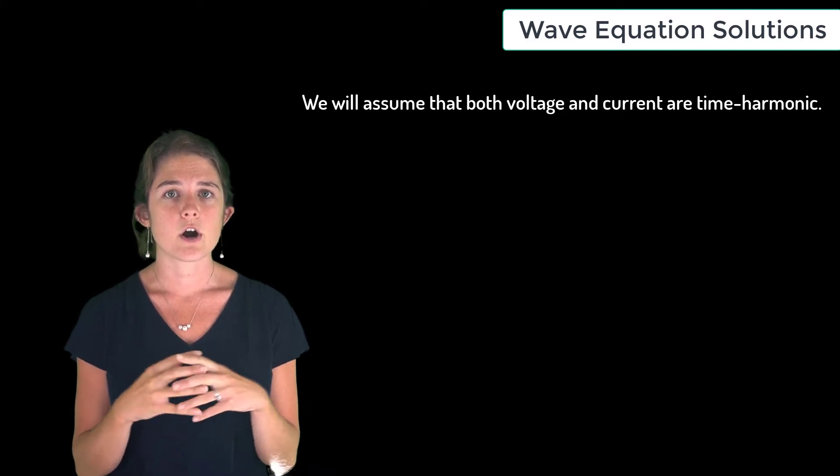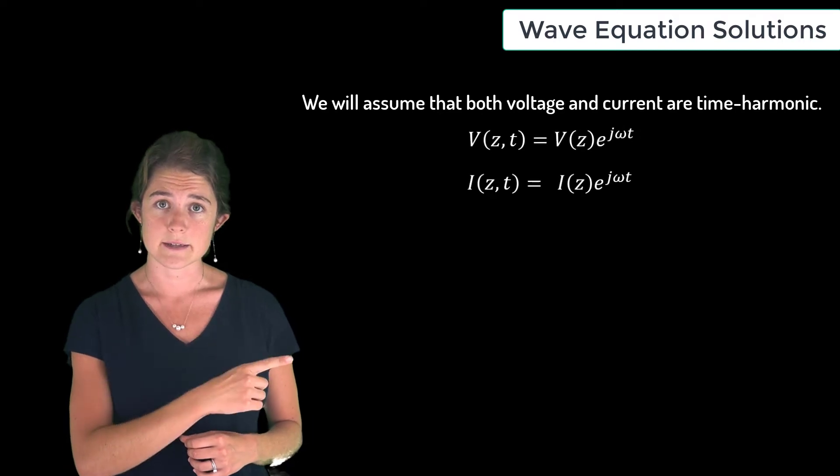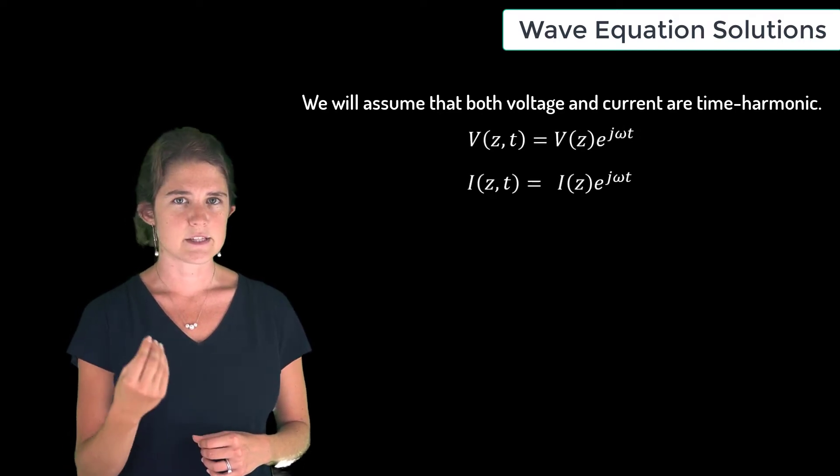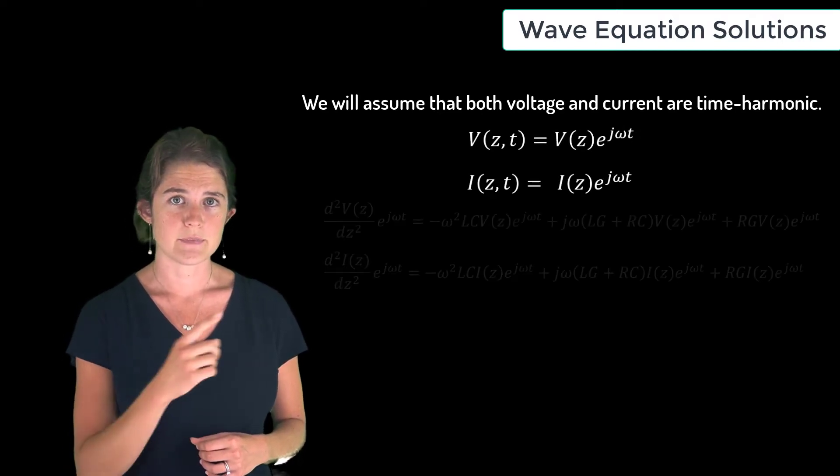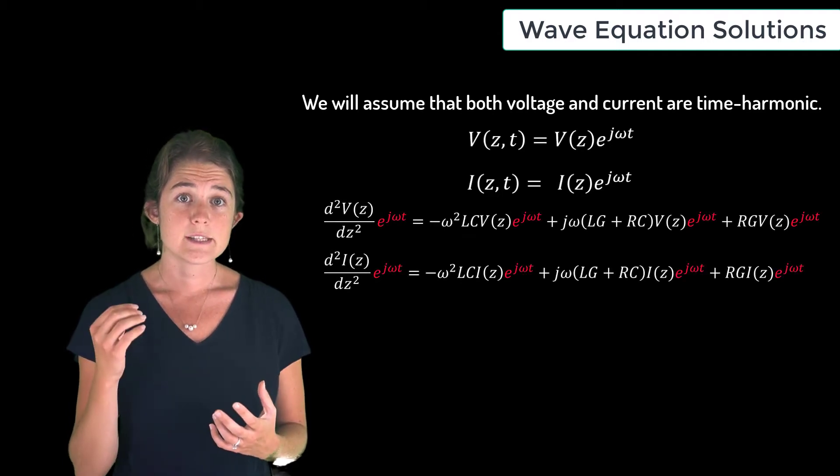both quantities are proportional to a time harmonic, meaning that the voltage and current may be written like this. This lets us rewrite the wave equations like this. Here, the time dependence cancels out and we see that the